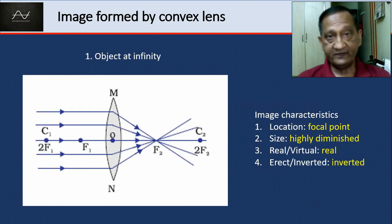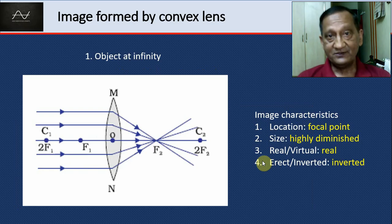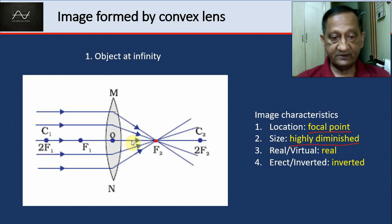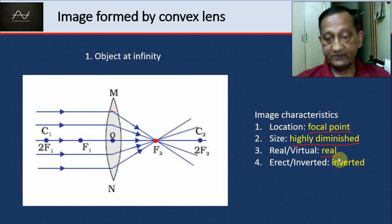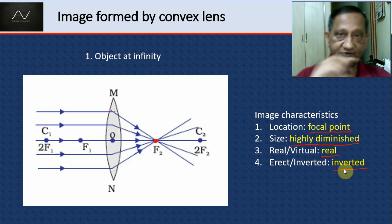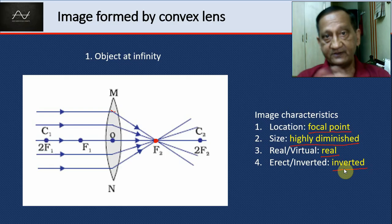Let's look at image formation by a convex lens, starting with the object at infinity and bringing it closer. If the object is at infinity, the rays come parallel to the principal axis and converge at the focal point — so the image location is the focal point. It is a highly diminished image, real because the rays are actually intersecting, and therefore inverted. If the image is real, it will also be inverted as long as the object is real.